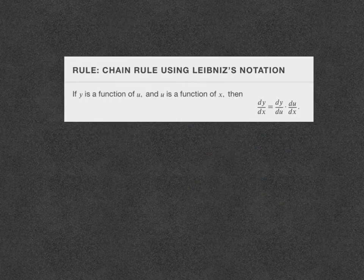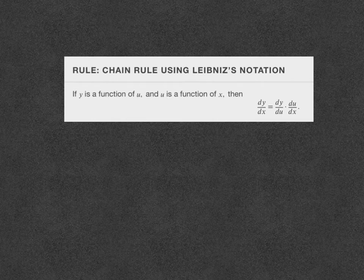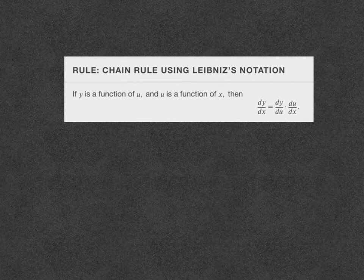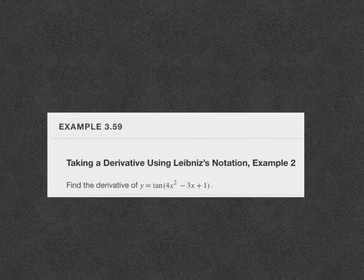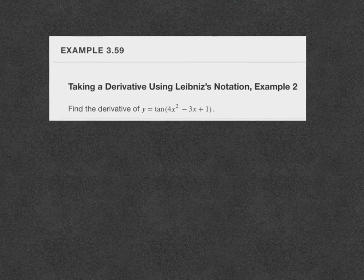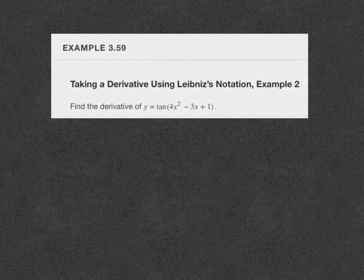This next example uses the alternative notation for the chain rule — our text refers to it as Leibniz's notation. He's one of the mathematicians who developed much of the calculus we still do today. This notation is dy/dx equals dy/du times du/dx. The reason I like this one is because you really focus on those nested inner and outer functions and then separating them.